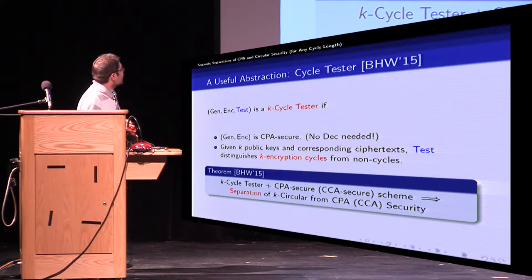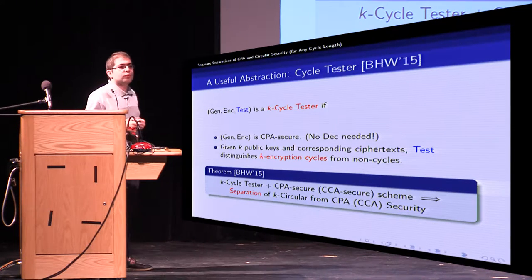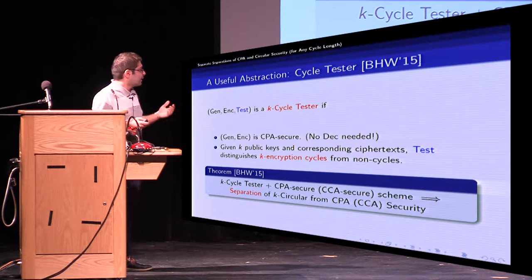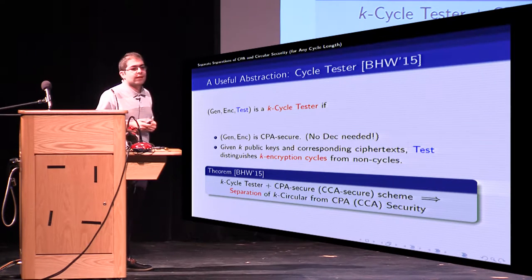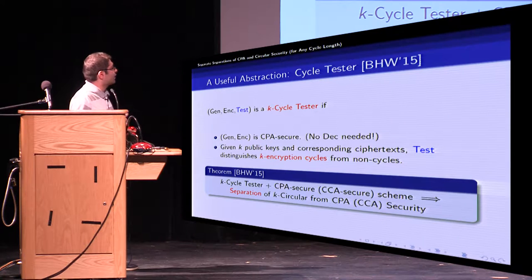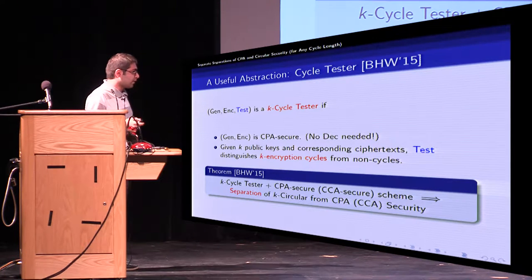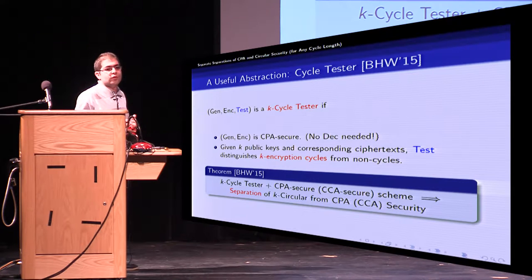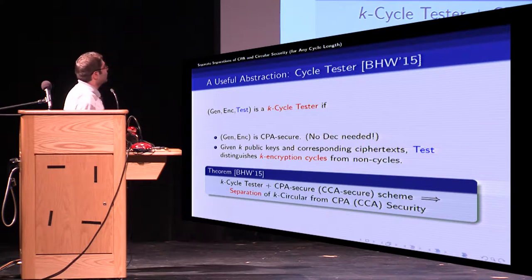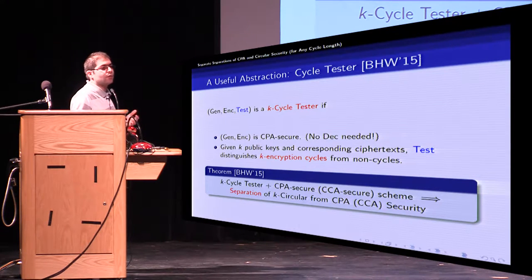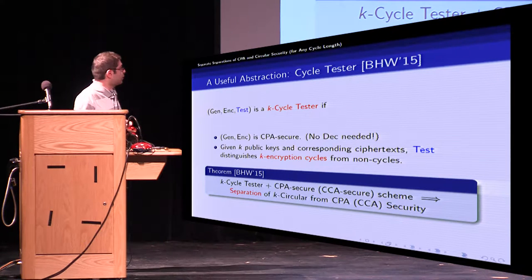Here is the theorem from BHW 15 which simplifies our job to make a counter example. It says that a K cycle tester plus essentially any CPA secure or CCA secure scheme implies separation of K circular from CPA or CCA security. And again by separation we mean a scheme which is CPA or CCA secure but not K circular secure.